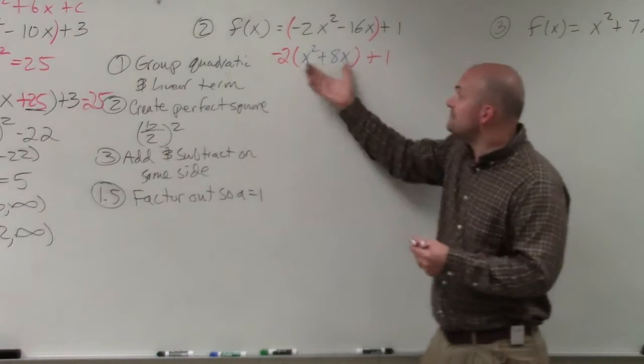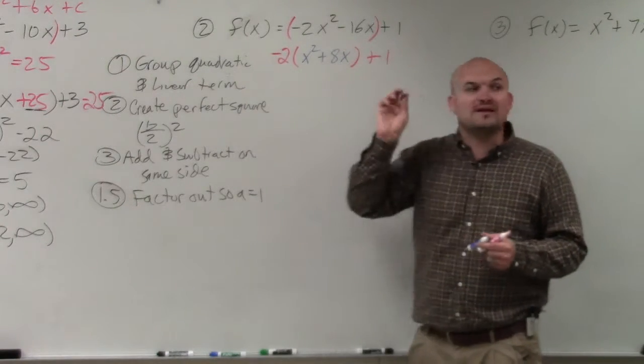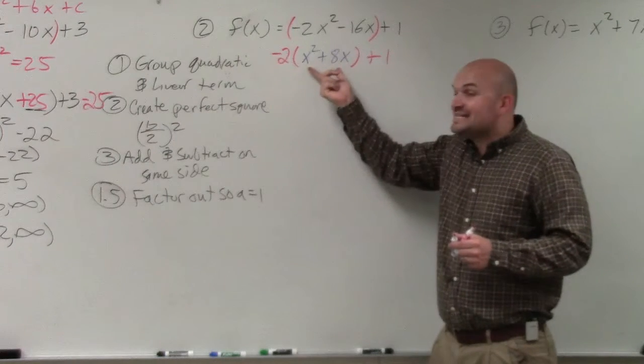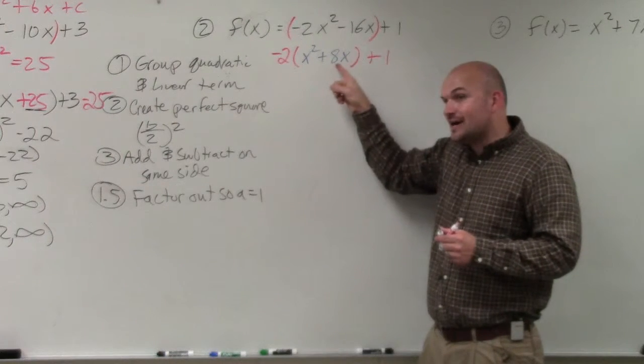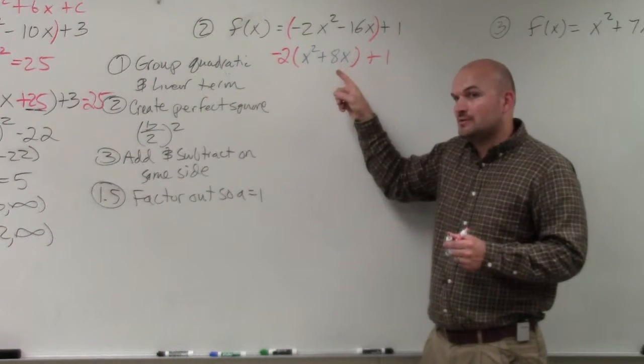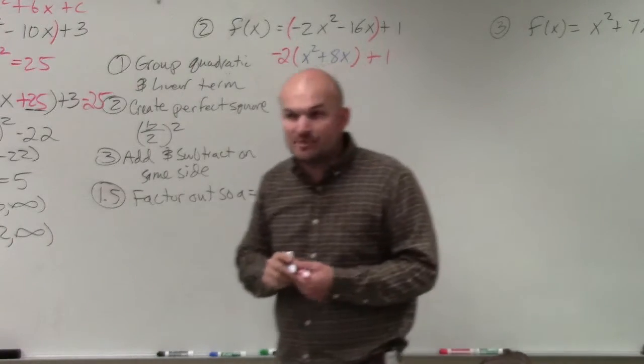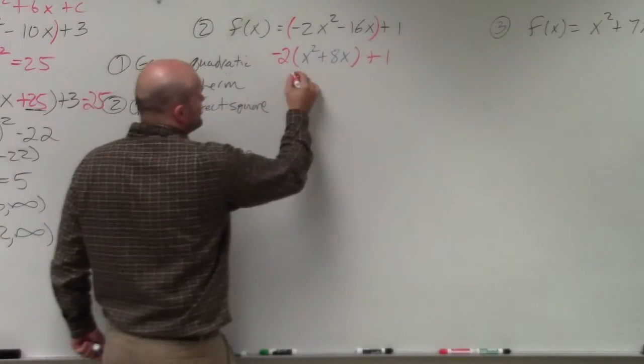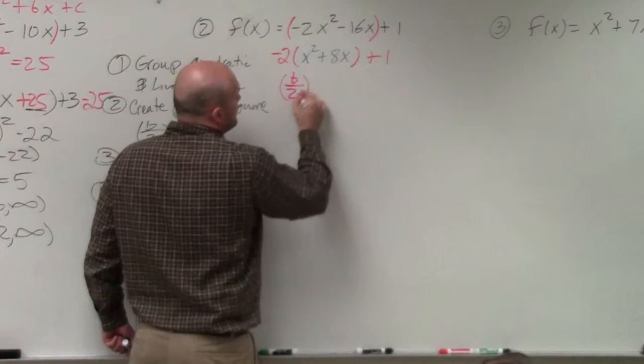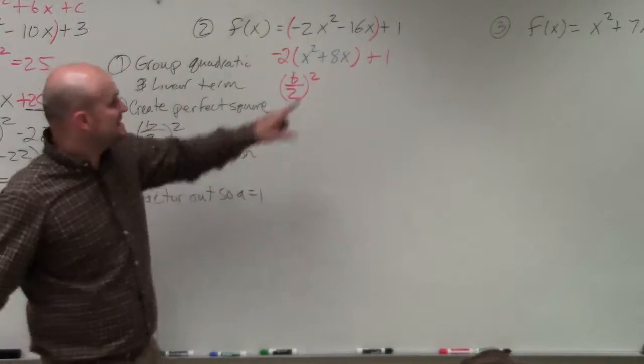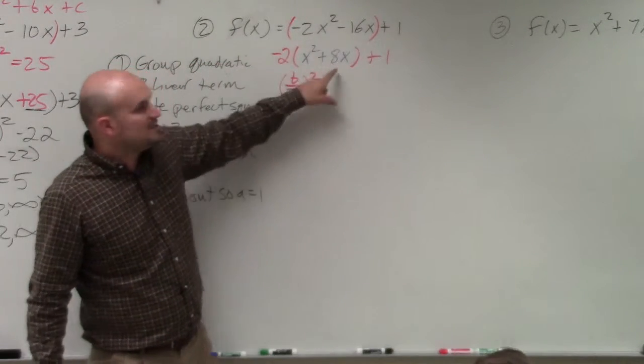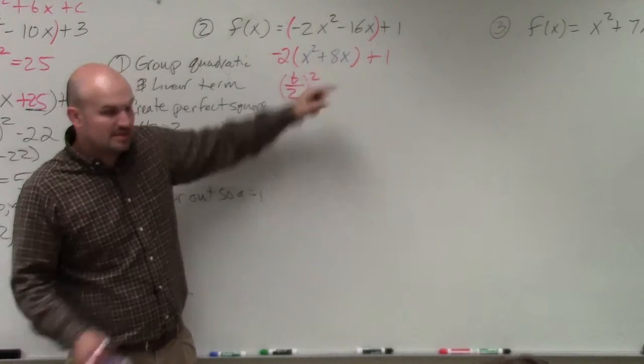Because what we're trying to accomplish is by factoring this out, we're trying to find what is the magic number that we can add inside of there that makes it a perfect square trinomial. Now if you don't know the perfect number in your head, then just do b divided by 2 squared. Don't make the mistake and use this b. Use the b of the one that you factored out, which is going to be 8.